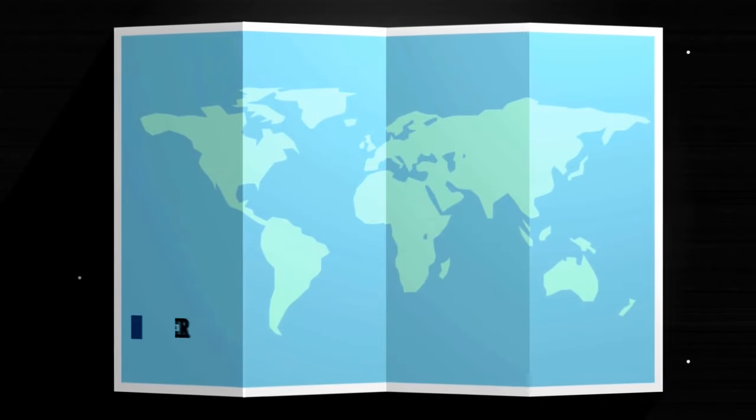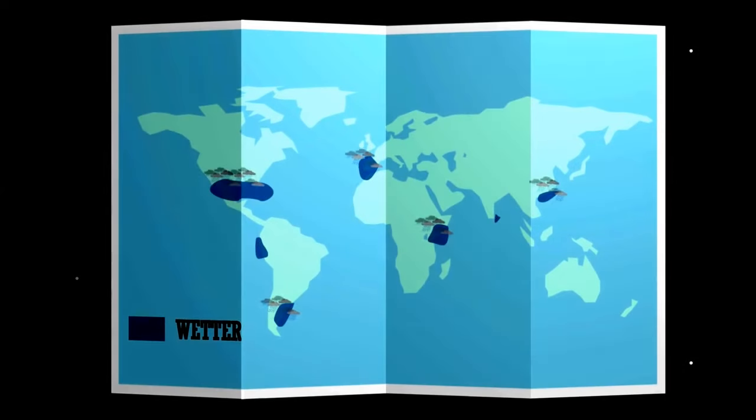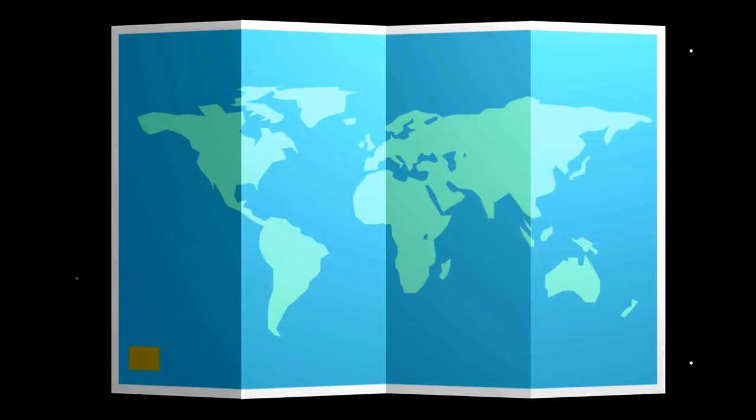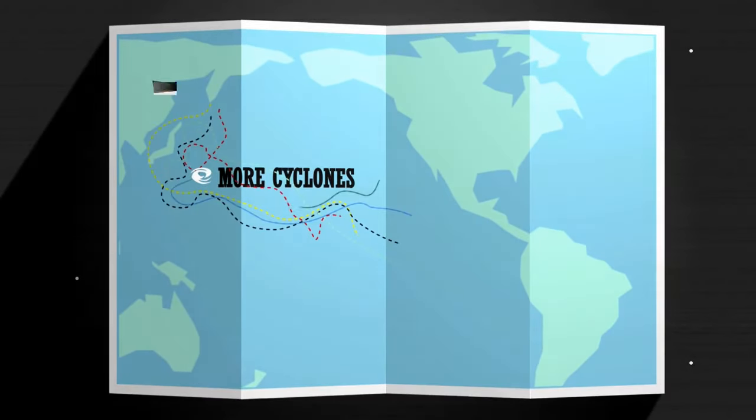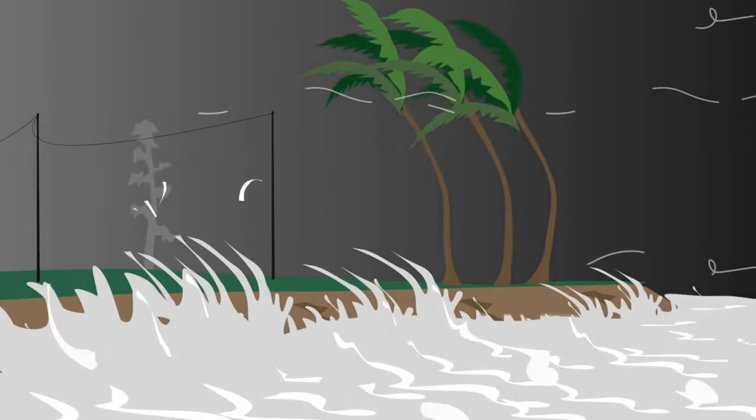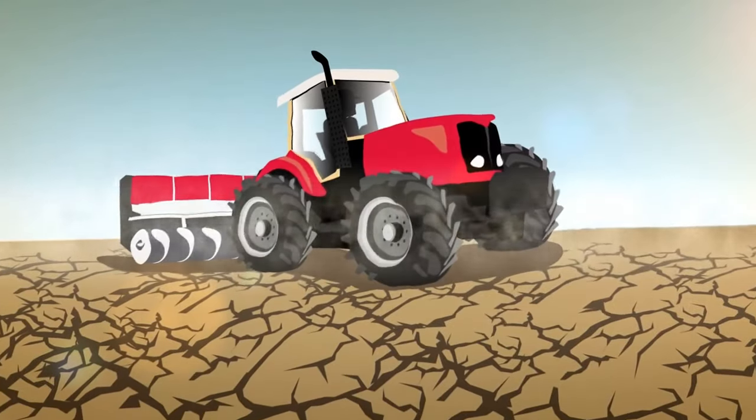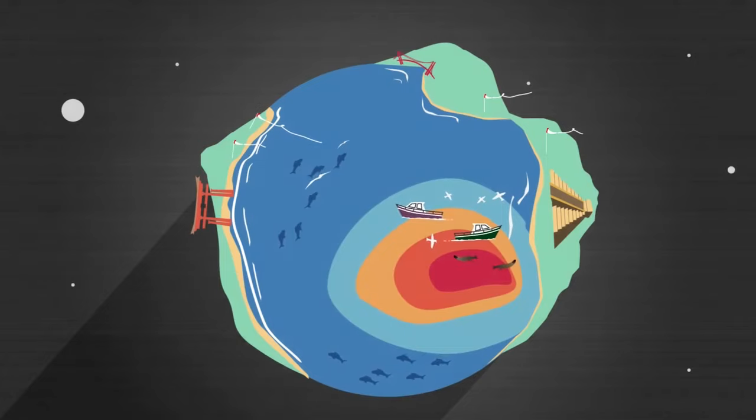The most predictable effects of El Niño are wetter weather conditions in certain areas and drier conditions in others. Warmer El Niño ocean temperatures can influence tropical cyclone activity in different regions and impact agriculture, marine life and fishing industries.